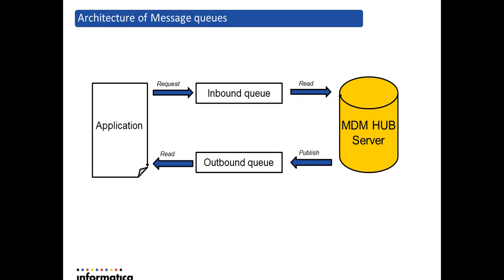This is a very basic architecture of message queues in Informatica MDM. It basically has two types of queues. One is the inbound queue, which is used to process SIF requests that are asynchronous in nature. It is by default created by the hub server installer while installing MDM. The second queue is the outbound queue — an optional queue which needs to be manually created in the server for publishing messages on data changes for external applications that can process them further based on their business needs.